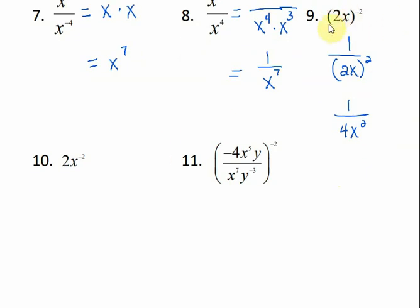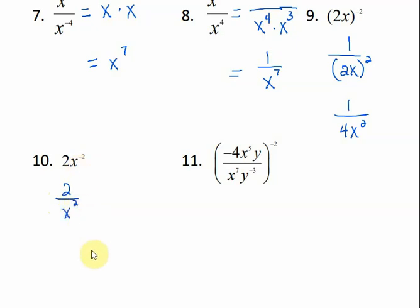Number 9 had the whole 2x in parentheses raised to the negative 2 power. But in number 10, the 2 is not being raised to that negative power, so the 2 stays where it is — if it's not negative, don't move it. But x is raised to a negative power, so I move it down to the denominator. Once simplified to only one of each variable with no negative exponents, we're done.